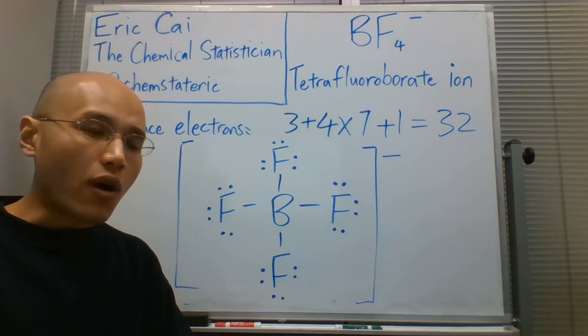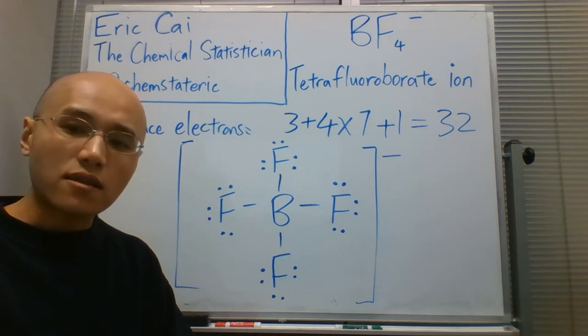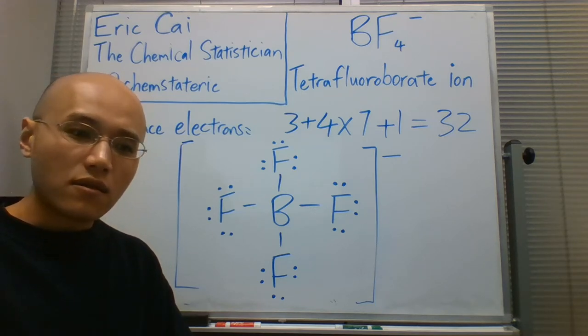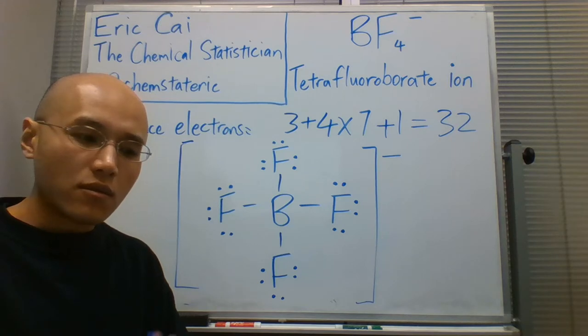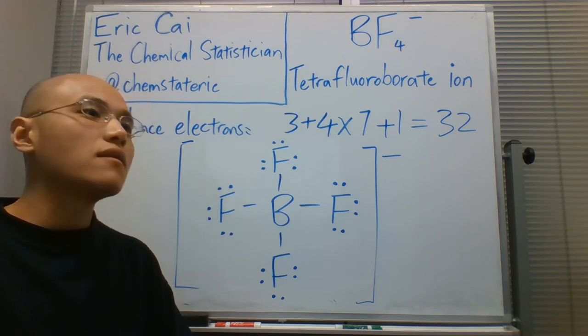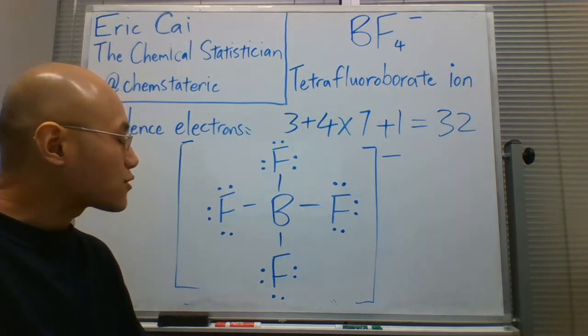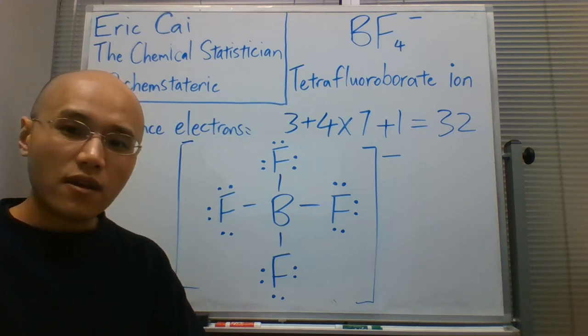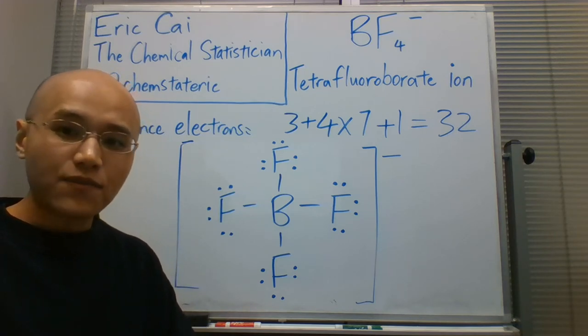That boron had only six electrons around it, so it was an incomplete octet. In that case, the boron trifluoride molecule exists, but the boron is actually even more stable with eight electrons around it, forming a stable octet.